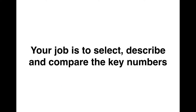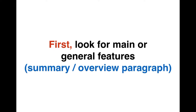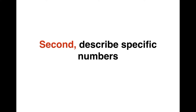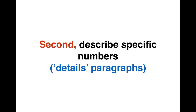For that reason, a key skill is selecting which information to mention. Your job is to select, describe, and compare the key numbers in the table. First, look for main or general features — this will be for your summary or overview paragraph just after the introduction. And second, describe specific numbers, which will be in your details paragraphs, paragraphs three and four.